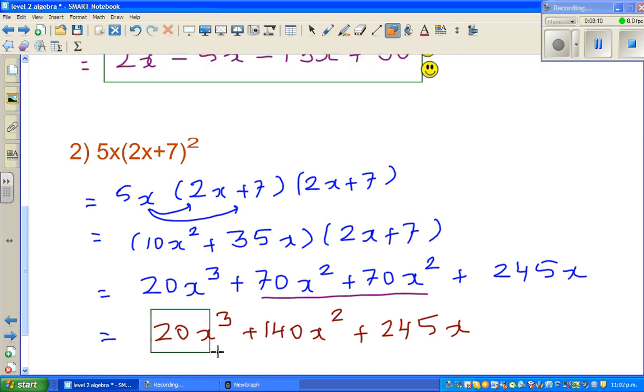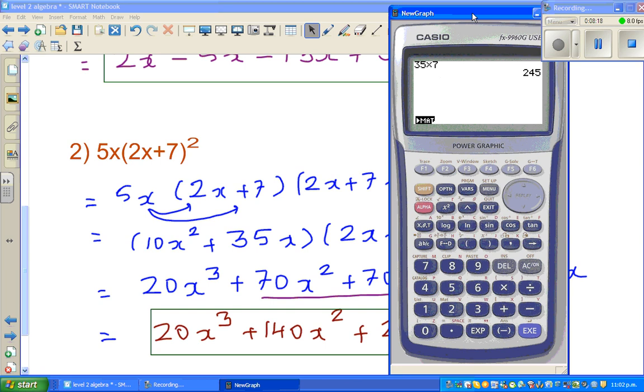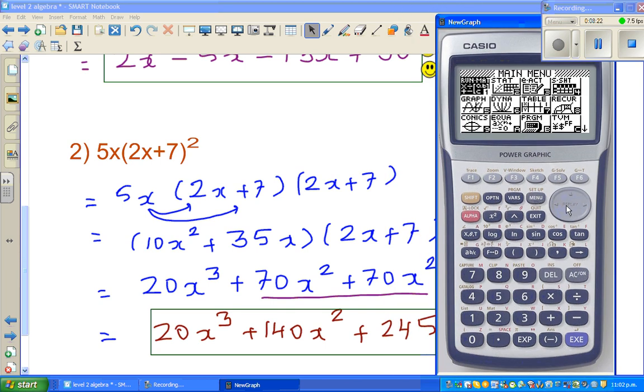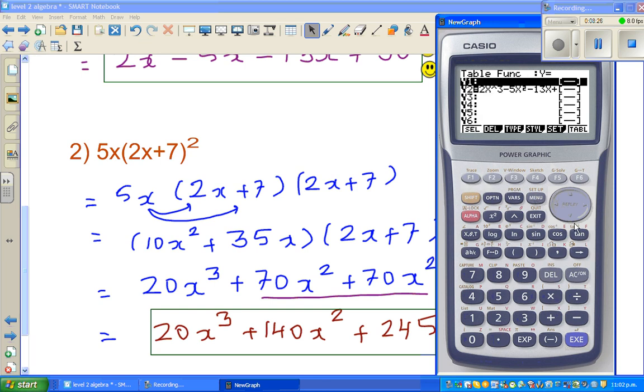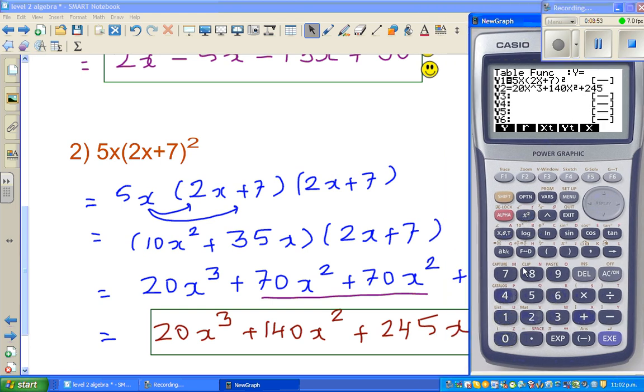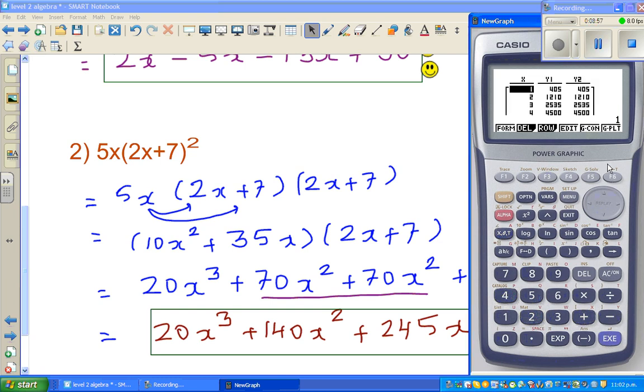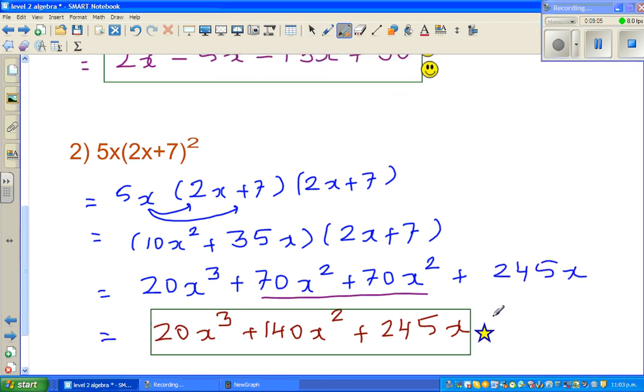I want to check my answer. I'm not quite confident about myself after the horrible mistake that I did. So go to menu and table. Delete the previous entries. First you type in the question: 5x bracket 2x plus 7 squared. And in y2 you type in 20x cubed plus 140x squared plus 245x. And then go to table. Here we go. Both the values are exact. So you should be proud of yourself. And you can give yourself 5 stars.